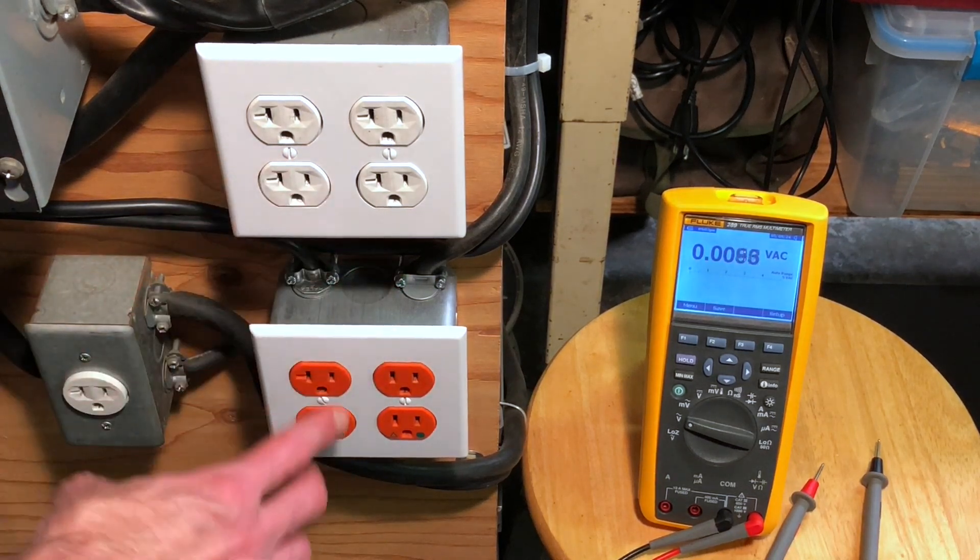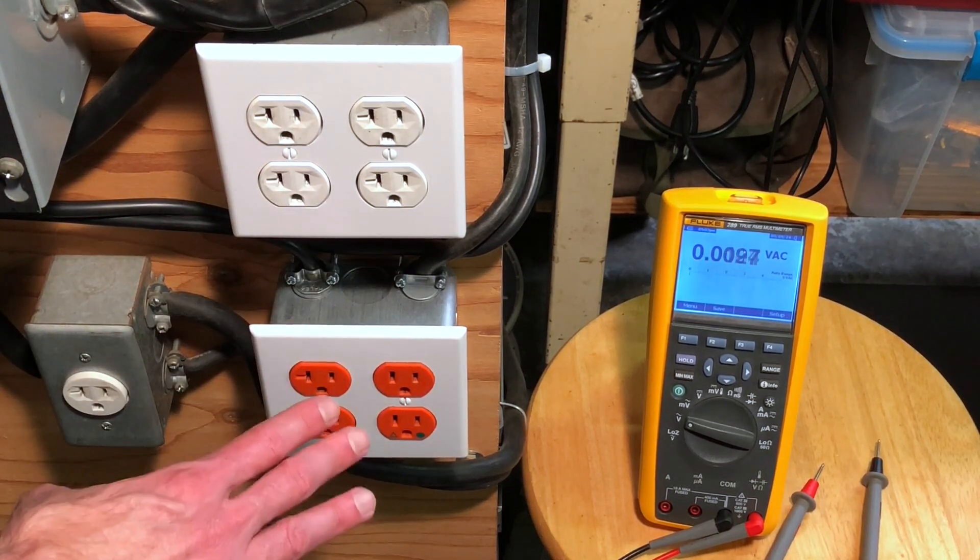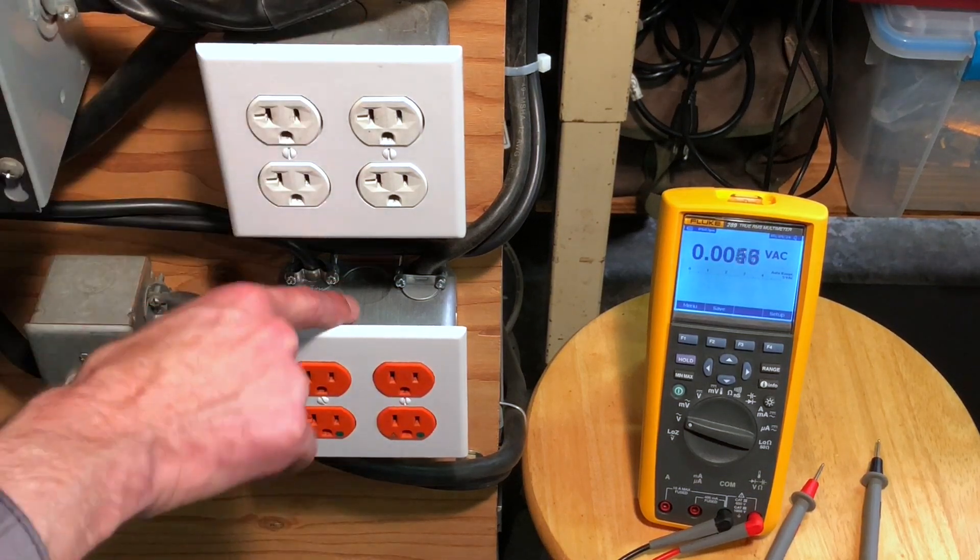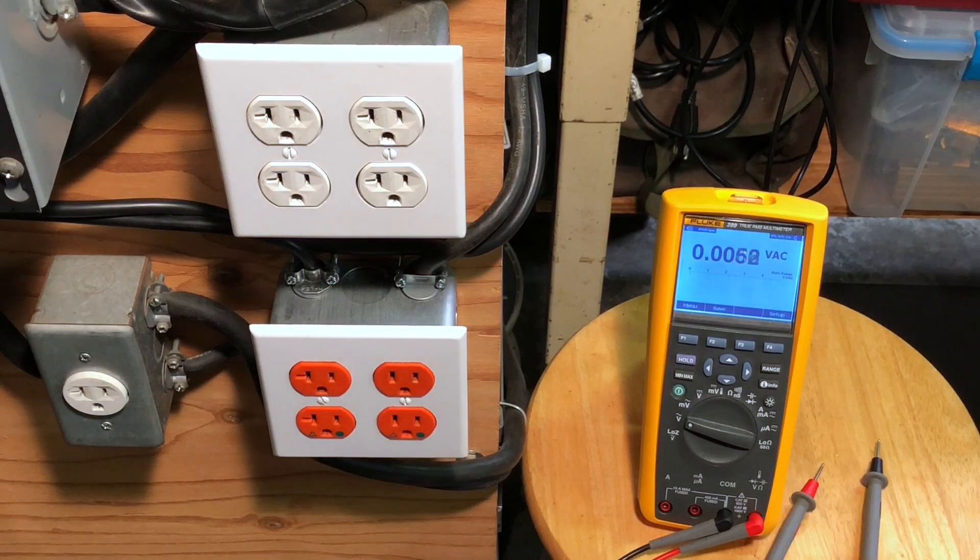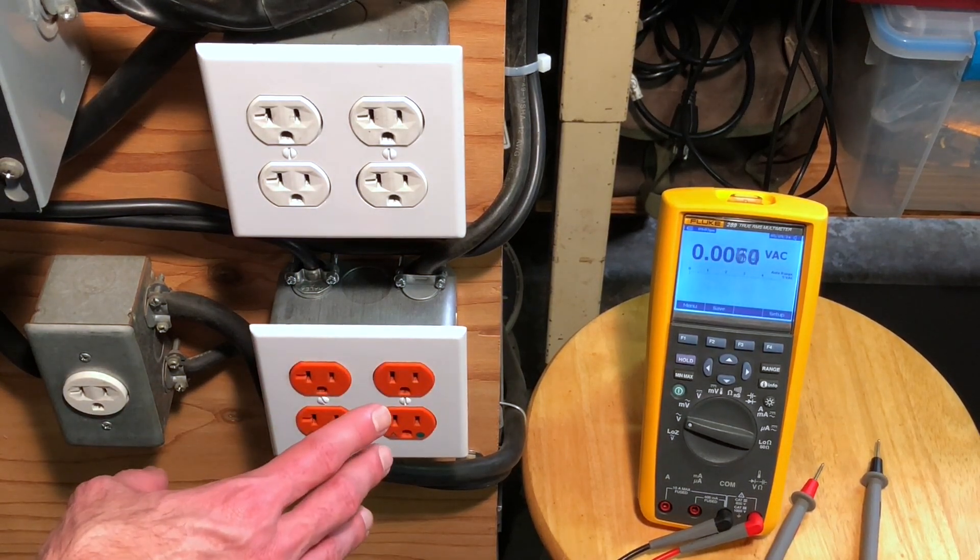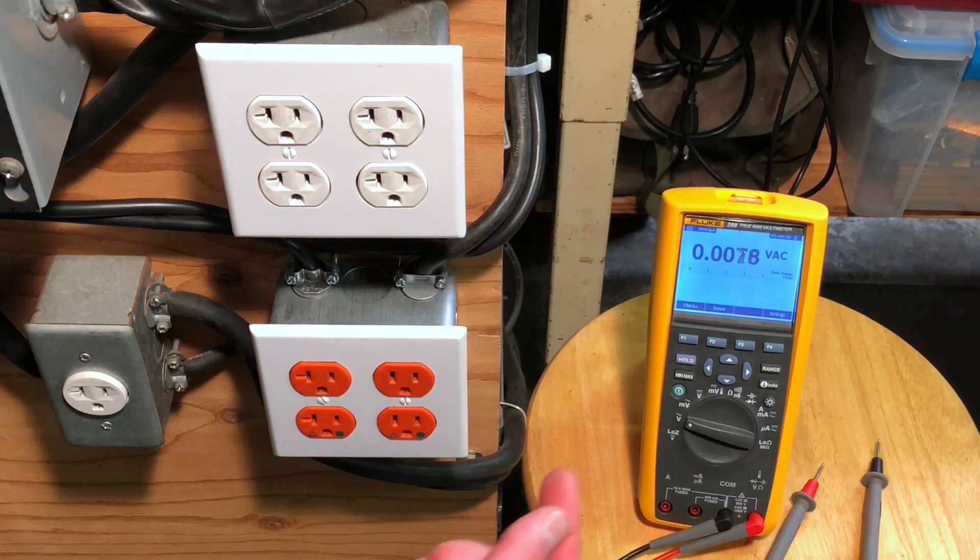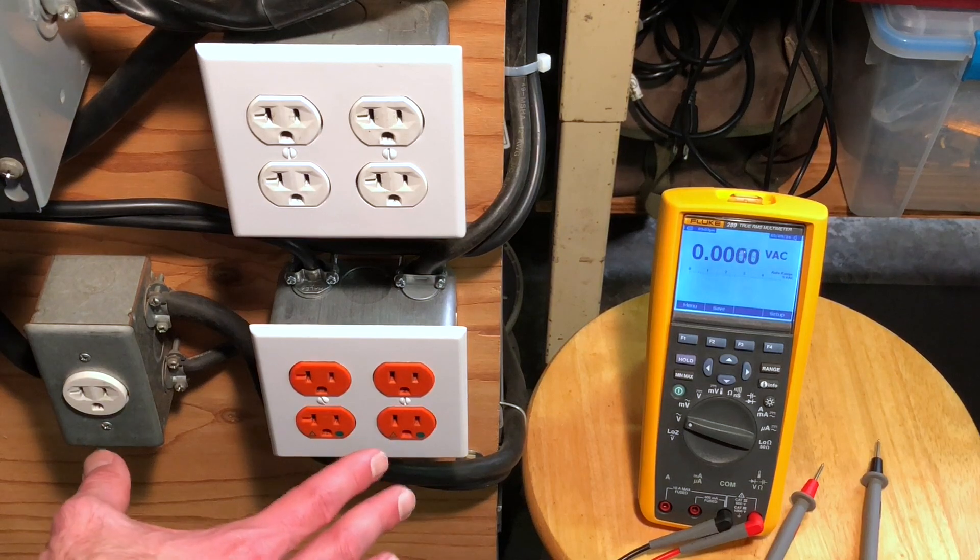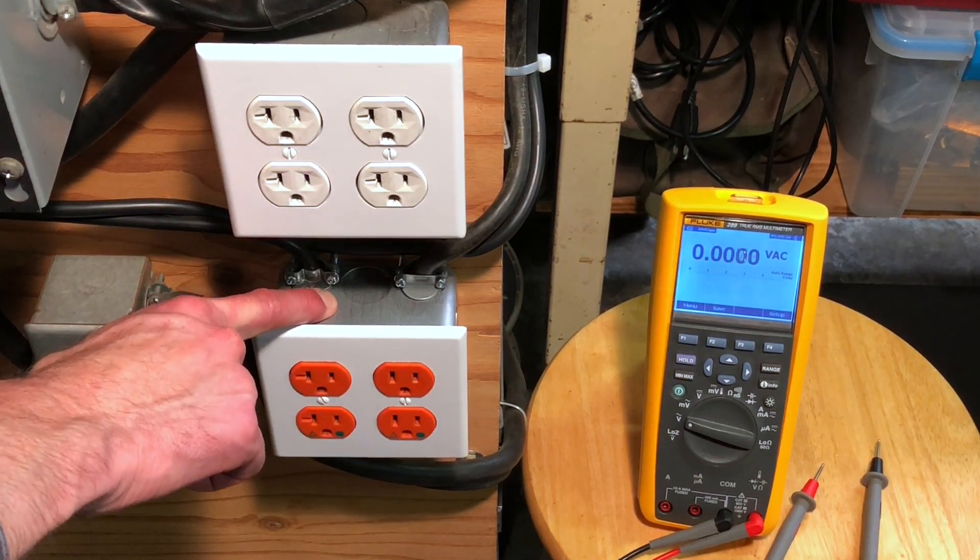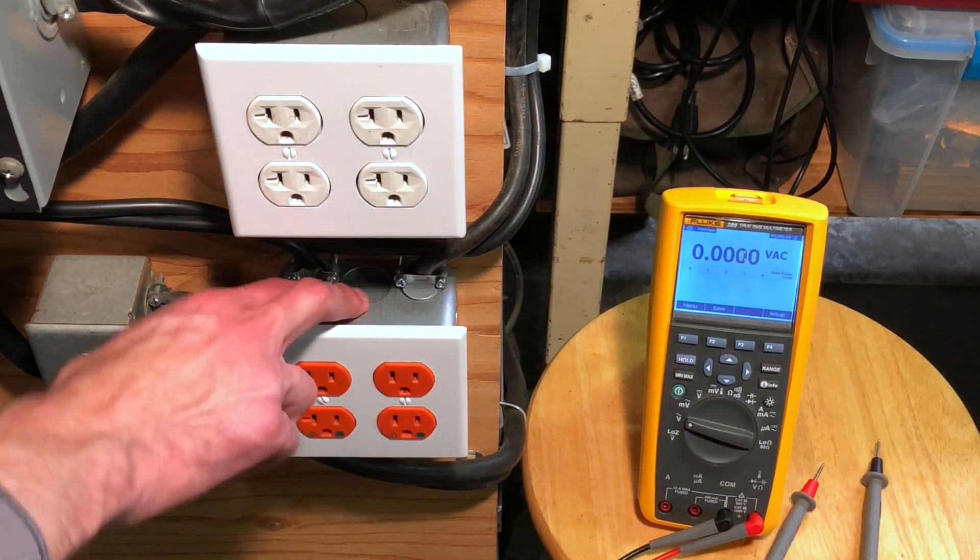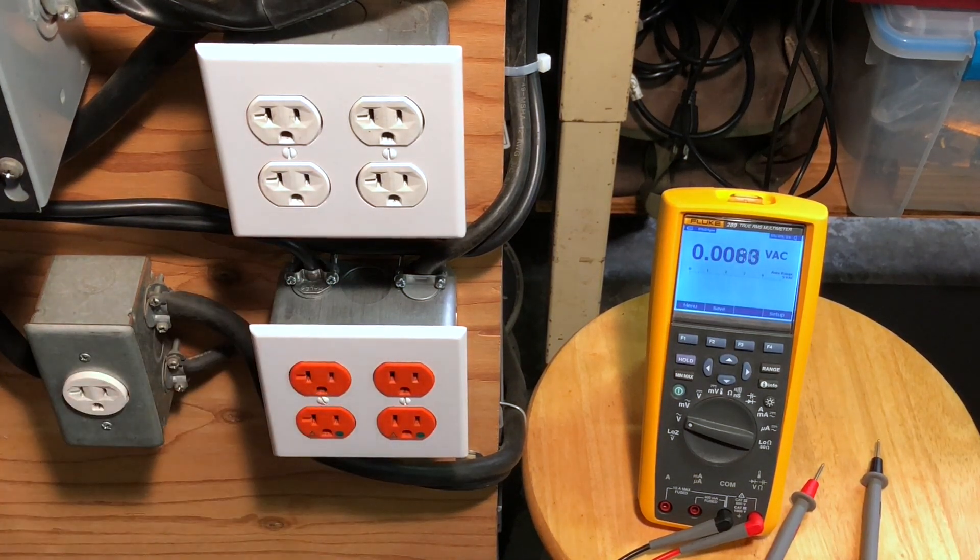One side of the isolation transformer secondary is connected to this side of the outlet, the slot, and the other side of the secondary is connected over to this slot. Just that simple. When I'm doing my testing down here, when I need to use a ground reference, I'll actually be using the ground reference on this box up here because there's nothing electrically connected here.